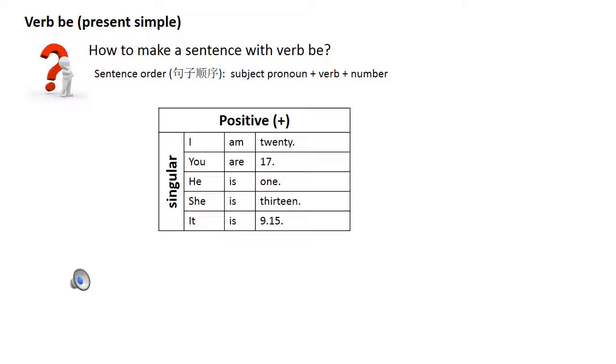You can also use the verb be with a number. Example: I am twenty, you are seventeen, he is one, she is thirteen, it is nine fifteen.